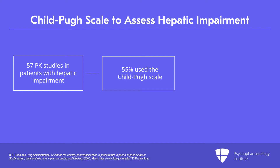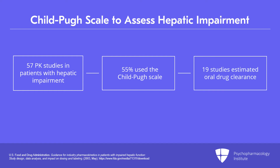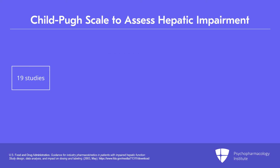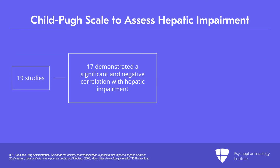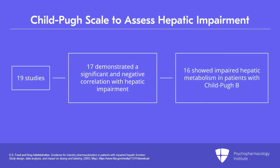Of those studies surveyed, 19 also had estimated oral drug clearance in normals and in patients with more than one Child-Pugh category. Among those 19 studies, 17 demonstrated a significant and negative correlation — with a correlation coefficient between 0.5 and 1 — between oral drug clearance and hepatic impairment as defined by Child-Pugh. Most importantly, 16 of these 17 studies showed impaired hepatic metabolism in patients with the moderate Child-Pugh category, which is Child-Pugh B.